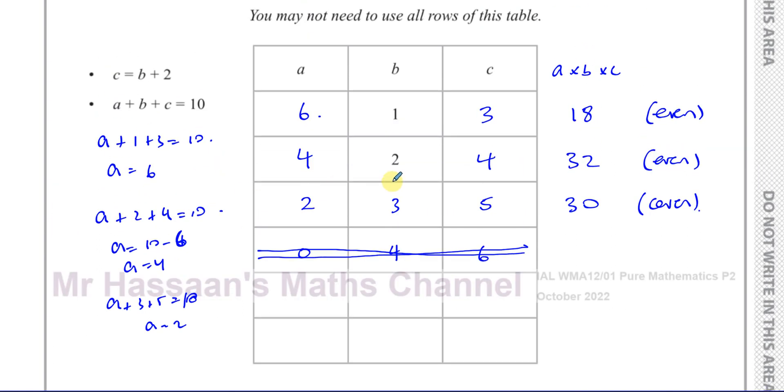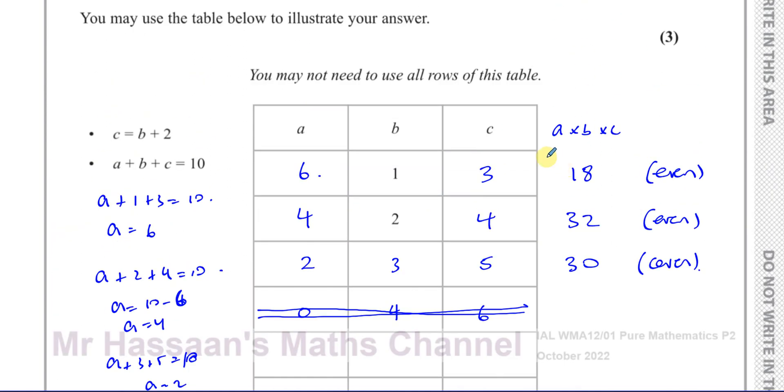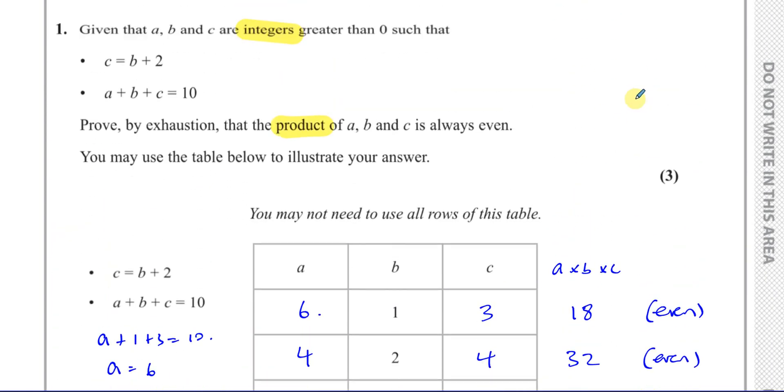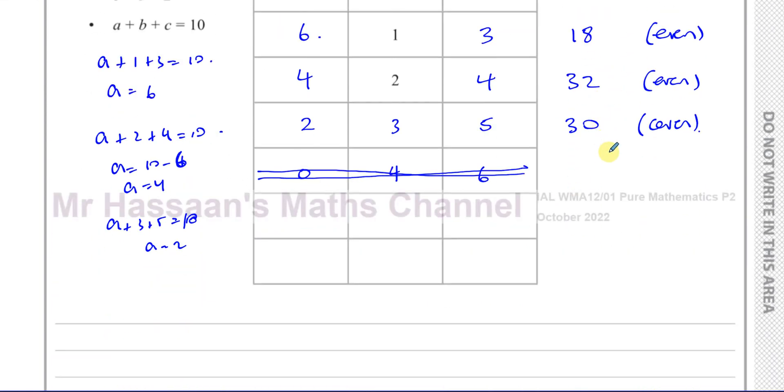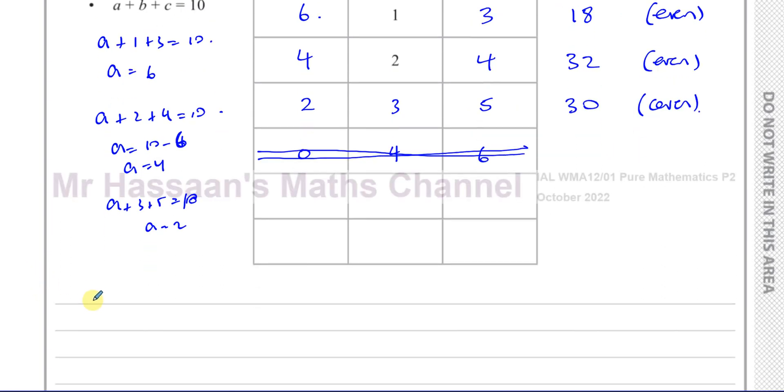So we can say that we've shown this now. But one of the things that you must always do in these proof questions, you must write a statement of proof. So you can say, we have shown for all possible values of A, B, and C.